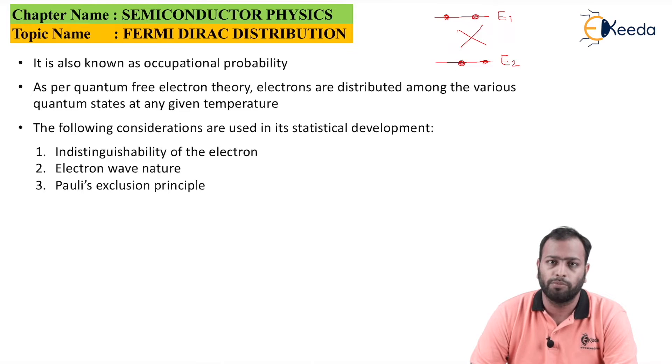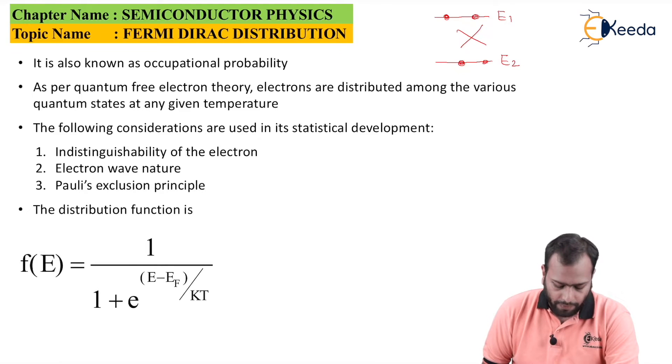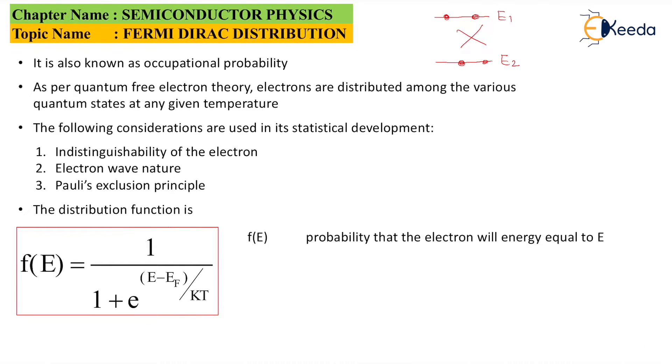This appears as F(E) equals 1 upon 1 plus e raised to E minus EF over KT. Where F(E) is nothing but the probability that the electron with energy equal to E. Basically, for any energy, if I want to find the probability, I will be just plugging in the value for E and I will be finding the probability of that electron.